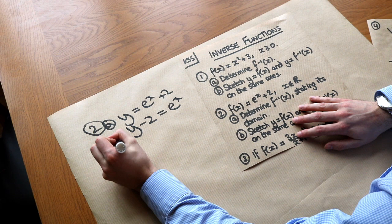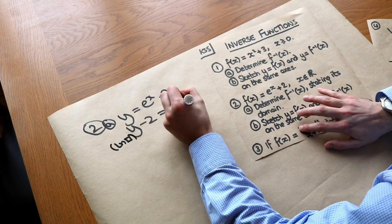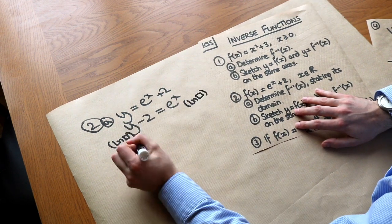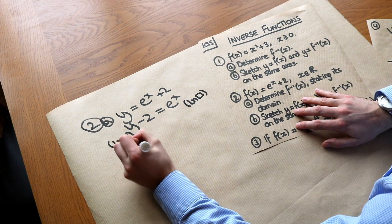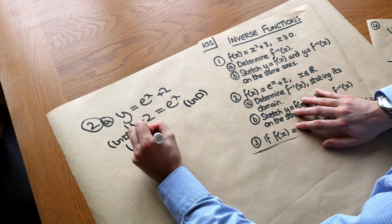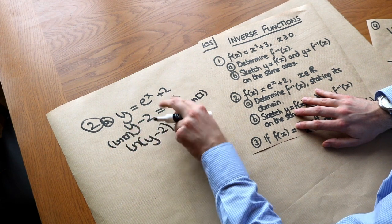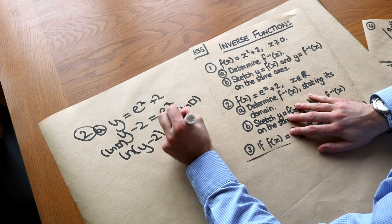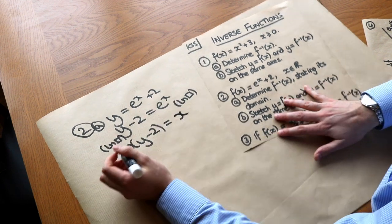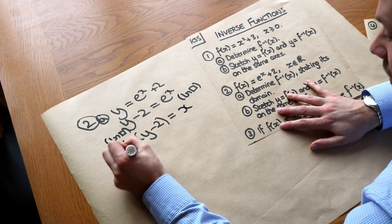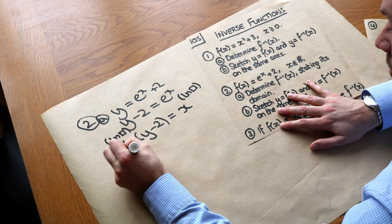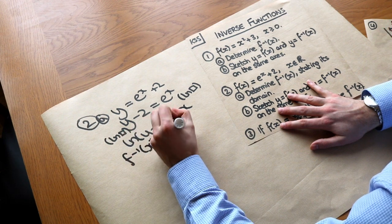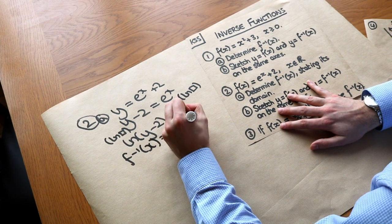Taking ln of both sides gives ln(y − 2) on the right. When we take ln of e^x, the ln and the e to the power cancel each other out, leaving just x. Then we replace the y back with x, giving f⁻¹(x) = ln(x − 2).